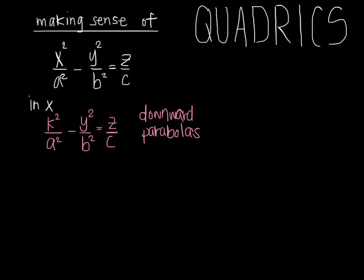Moving on to traces in Y — recall that the opposite signs on the quadratic terms come in handy here. We again find parabolas, but now the quadratic term with a variable is positive instead of negative. So we have upward facing parabolas for traces in Y.